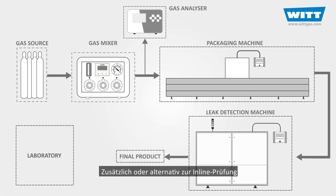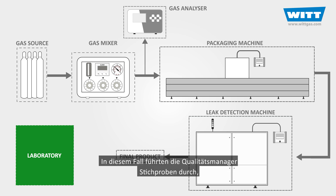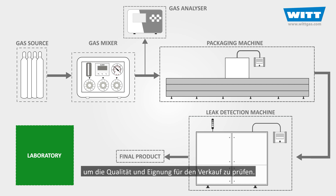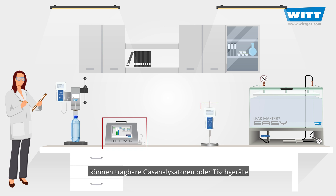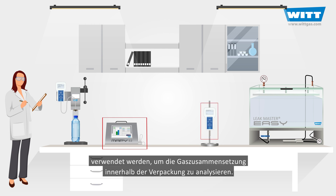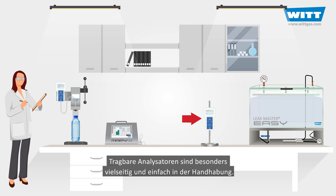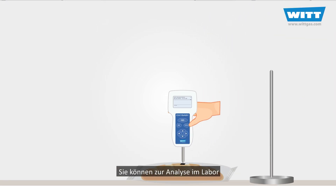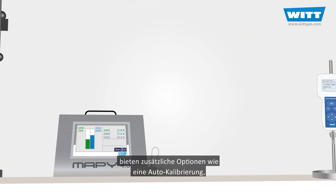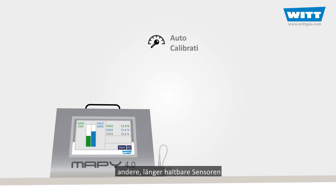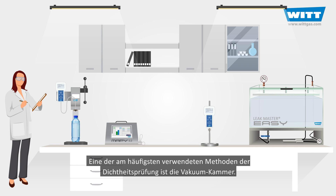In addition to the mentioned equipment in the production line, laboratory testing devices are used as well. Quality control experts perform tests on randomly chosen packages to check the quality and suitability for sale. Along with some other accessories like can piercers, tabletop or portable gas analyzers could be used for analyzing the gas concentration inside different kinds of packages. Portable analyzers are highly versatile and very easy to use — they can be used in a laboratory or directly on the production line. Tabletop analyzers can have other options like auto-calibration, long-life measuring cells, and more communication ports.